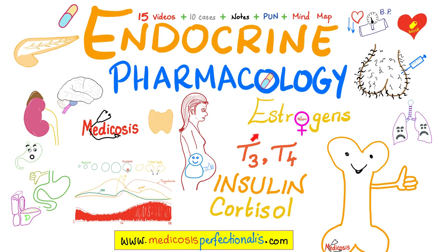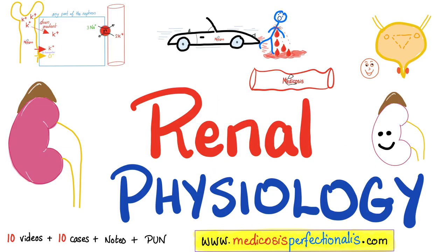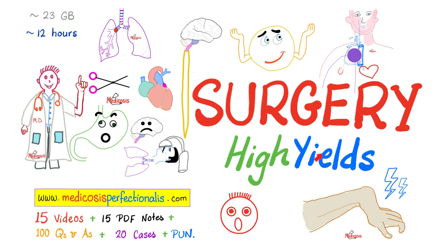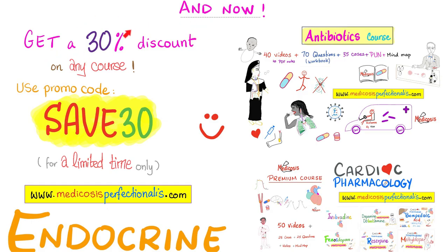If you'd like to learn more about adrenal cortex pharmacology, insulin, cortisol, thyroxin, estrogen, progesterone, testosterone, etc., download the endocrine pharmacology course at medicosisperfectionist.com — it comes with videos, cases, notes, and a mind map. There's also a renal physiology course on the website, and renal pharmacology belongs with the cardiac pharmacology course. Get a 30% discount by using promo code SAVE30.